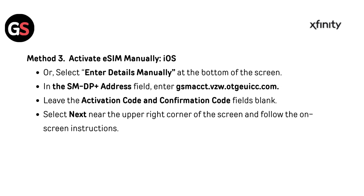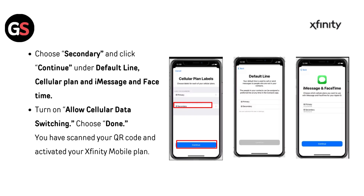Method 3 — Activate eSIM manually on iOS. Select Enter Details Manually at the bottom of the screen. In the SM-DP+ Address field, enter gsmacct.vzw.otguicc.com. Leave the activation code and confirmation code fields blank. Select Next in the upper right corner and follow the on-screen instructions. Choose Secondary and click Continue under Default Line, Cellular Plan, and iMessage and FaceTime. Turn on Allow Cellular Data Switching, then choose Done. You have now activated your Xfinity Mobile plan.